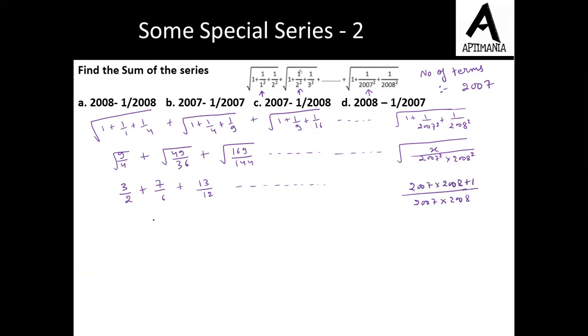Now see, we can split this: 3/2 can be written as 1 + 1/2, this can be written as 1 + 1/6, this can be written as 1 + 1/12, and that's how we can write the last term as 1 + 1/(2007 × 2008). Since the number of terms is 2007, we get 1 appearing 2007 times.